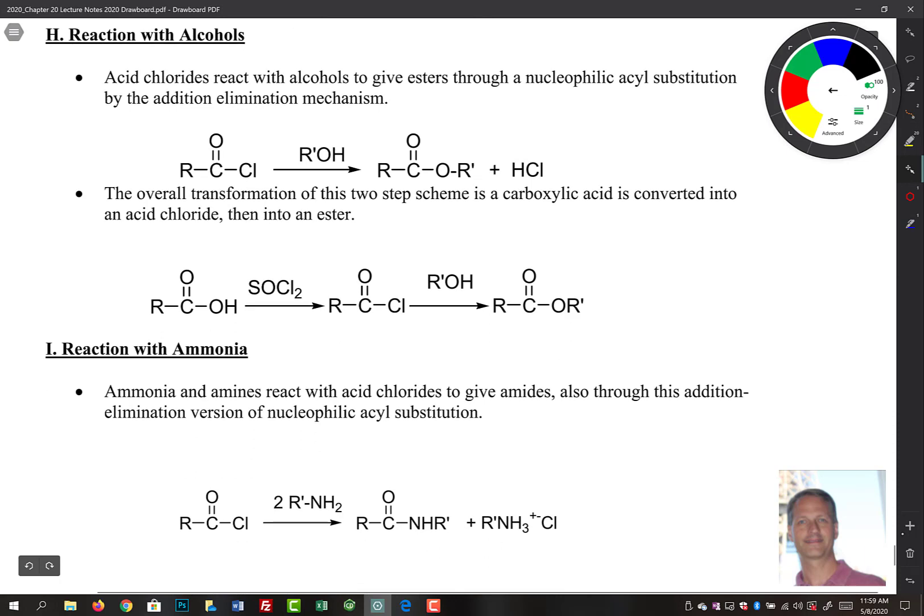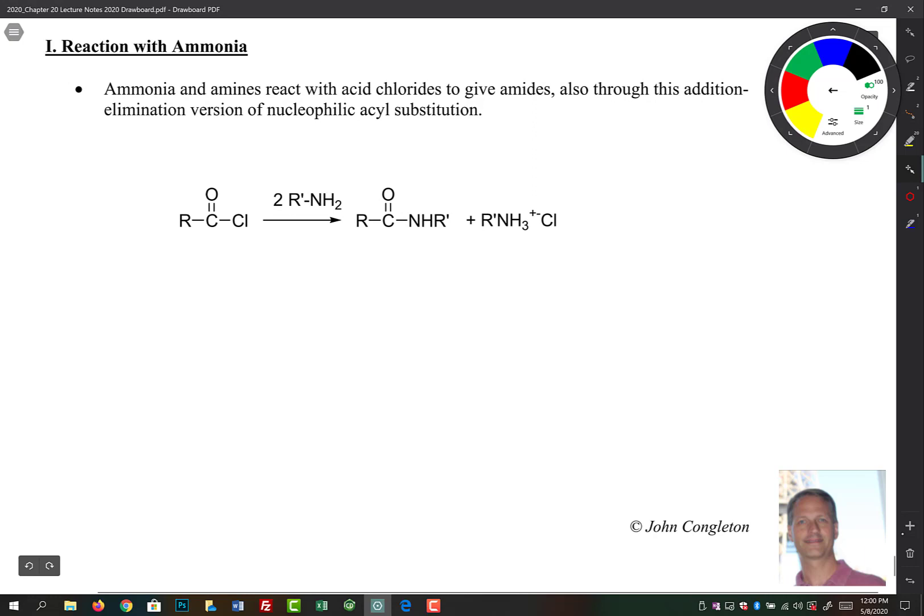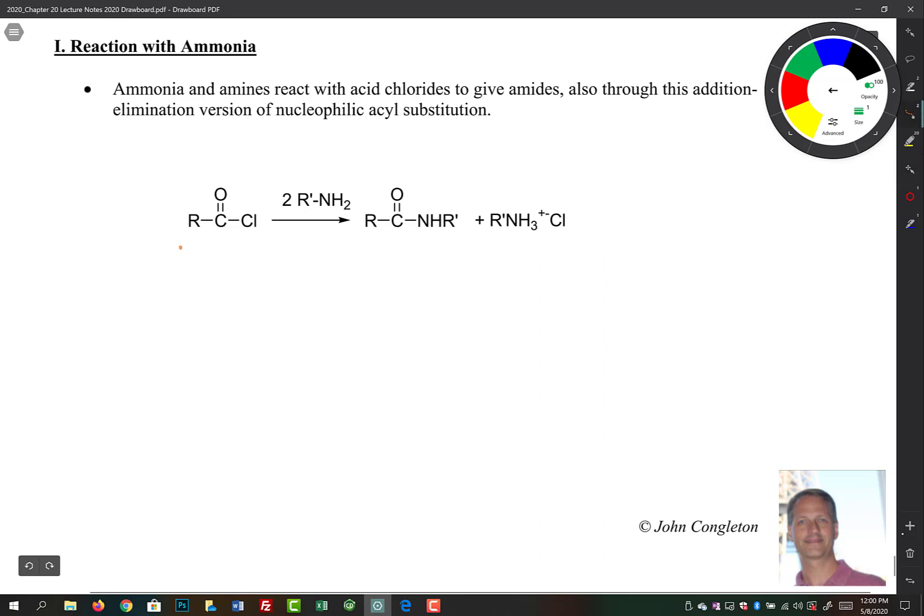The other is reaction with alcohols. I like to hold on and cover the mechanisms for this in chapter 21 because these are interconversions of carboxylic acid derivatives. Here we have an acid chloride and an alcohol to make an ester. You have your acid chloride, you have your alcohol, and you have made an ester. Same thing down below—this is the overall transformation starting off with a carboxylic acid. The other thing we can do is carry out reactions with ammonia. This is a chapter 21 mechanism, but here you have an acid chloride reacting with an amine to form an amide.